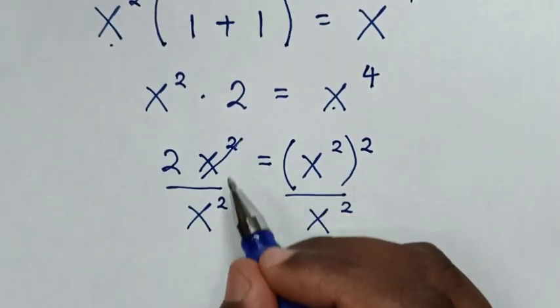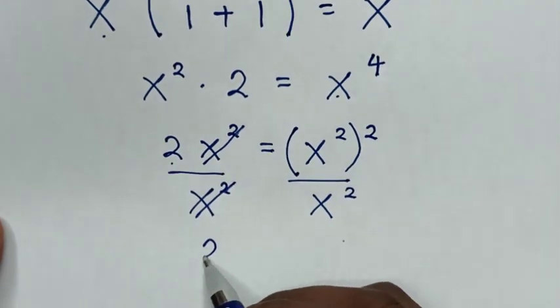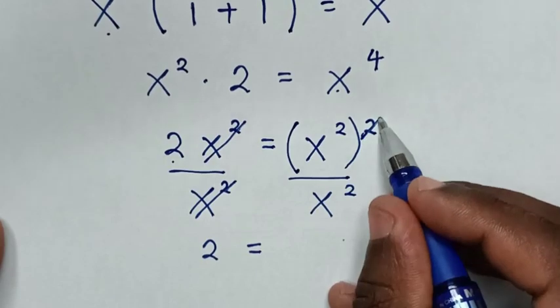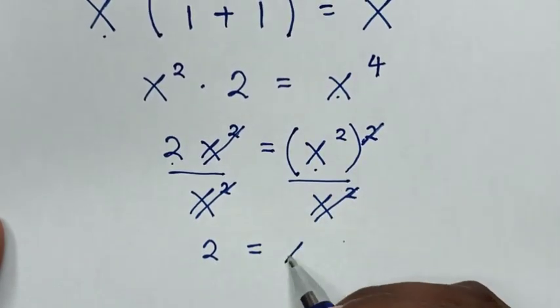So this x² will cancel with this x², then here it will be 2 is equal to, this square will cancel with this x², then it will be x².